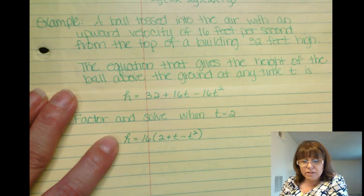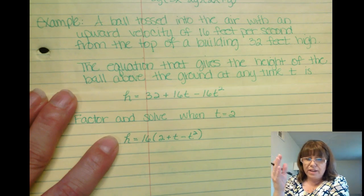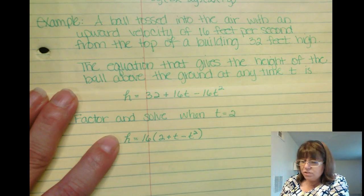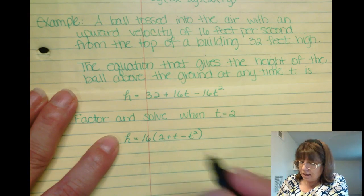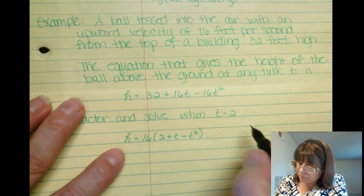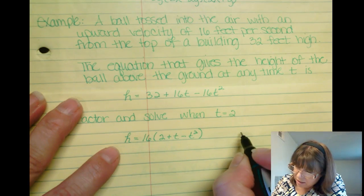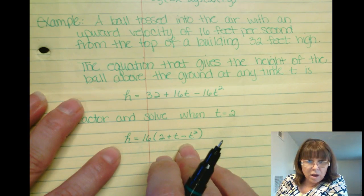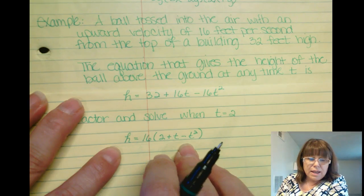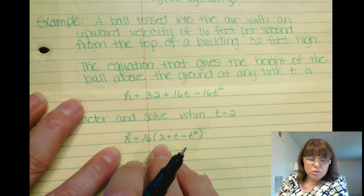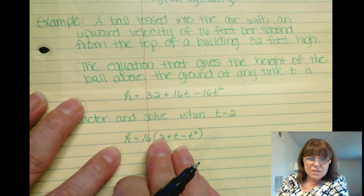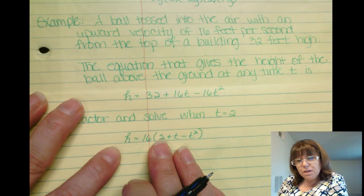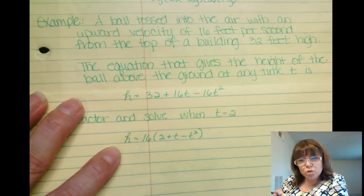Now if you don't like the way that it looks where it's the opposite way of how we've been looking at it, you can rewrite it. But if you just take it as is, I'm looking for two numbers that multiply to negative 1, and two numbers that multiply to 2, but their sum is positive t. That could be pretty confusing.